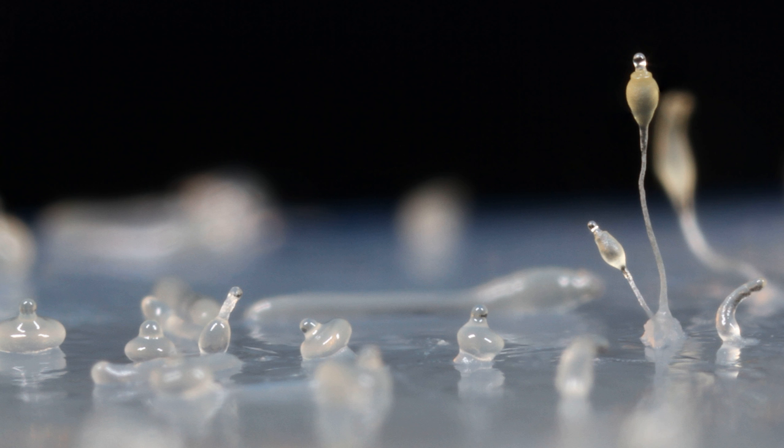In Dictyostelium, aggregation is signaled by cAMP, but others use different chemicals. In the species Dictyostelium purpureum, the grouping is by kinship, not just by proximity.